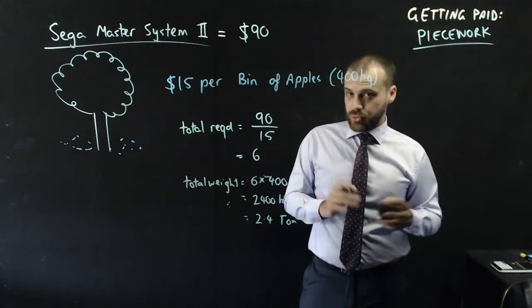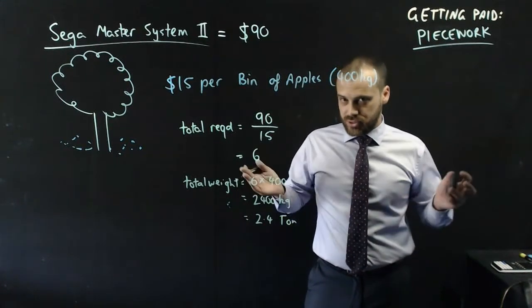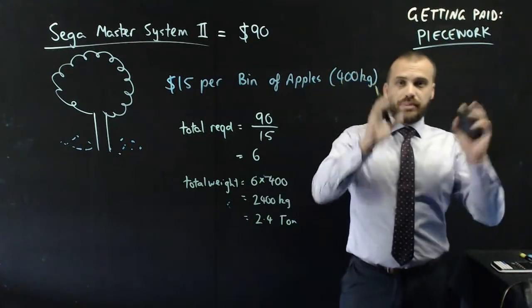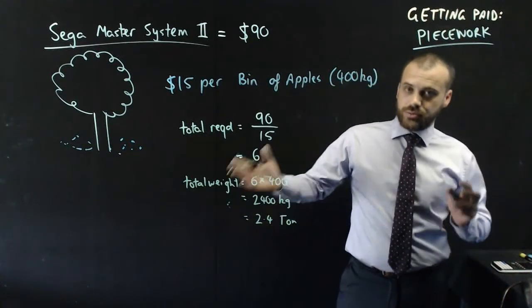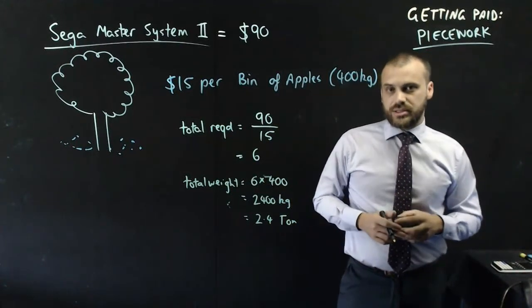That means that I picked 1.2 tons, approximately, although my brother was maybe a little bit faster since he was 2 years older. That is getting paid piecework, and that was my first job, and that's how we got our Sega Master System 2.